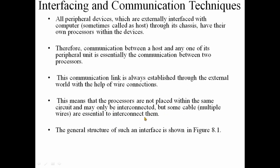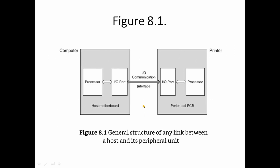Consider a computer with a processor, host motherboard, IO port, and printer. These are two separate devices — the host processor and the printer's processor — each in their own circuit. They need to be connected through an IO interface. This is the IO-interface structure.